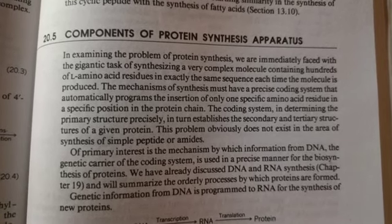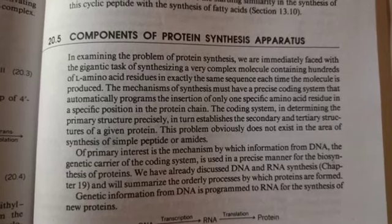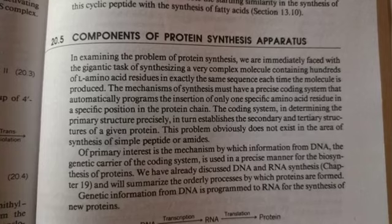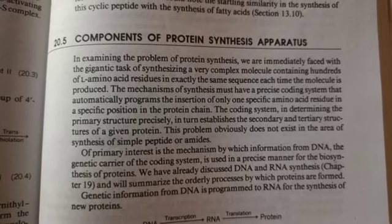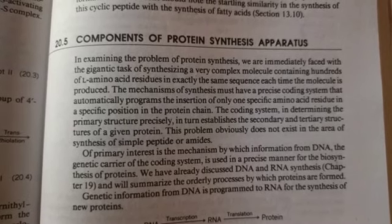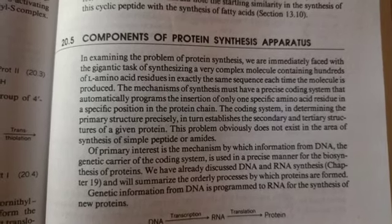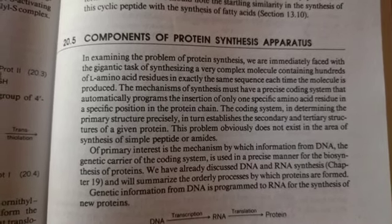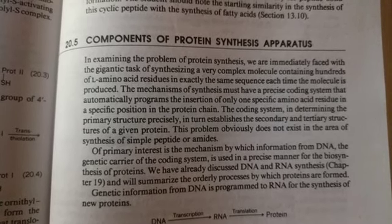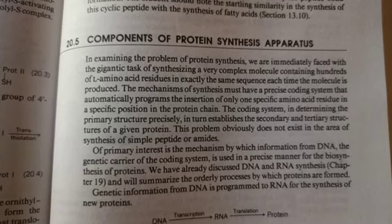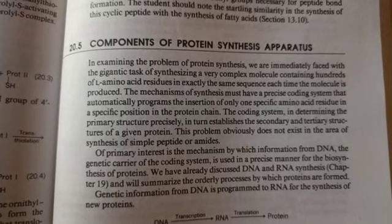In this process, three key RNAs are synthesized: first, messenger RNA (mRNA), which carries the genetic message from DNA for the orderly and specific sequence of amino acids for the new protein and acts as a template for protein synthesis; second, ribosomal RNA (rRNA), which serves as a structural component of ribosomes; and third, transfer RNA (tRNA), which carries activated amino acids to specific recognition sites on the mRNA template.